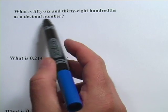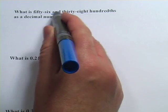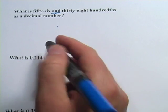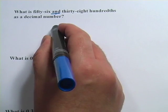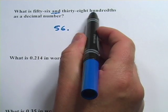This first one says, what is 56 and 38 hundredths as a decimal number? The 'and' here is kind of a tip-off that that's where the decimal point goes. So we have 56 and, and then it's 38 hundredths.